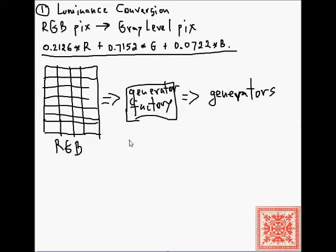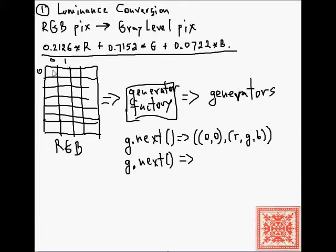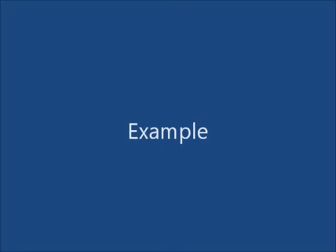We call this generator factory and it produces a generator object G. We call next on it, and it will return two-tuples: the first element is itself a two-tuple — an (x, y) coordinate — and the second is a three-tuple of the RGB values of that pixel. We assume images use the PIL coordinate system: x is the column, y is the row. So on the first call it's (0, 0) and the RGB, and on the second call it's (1, 0) and the RGB.